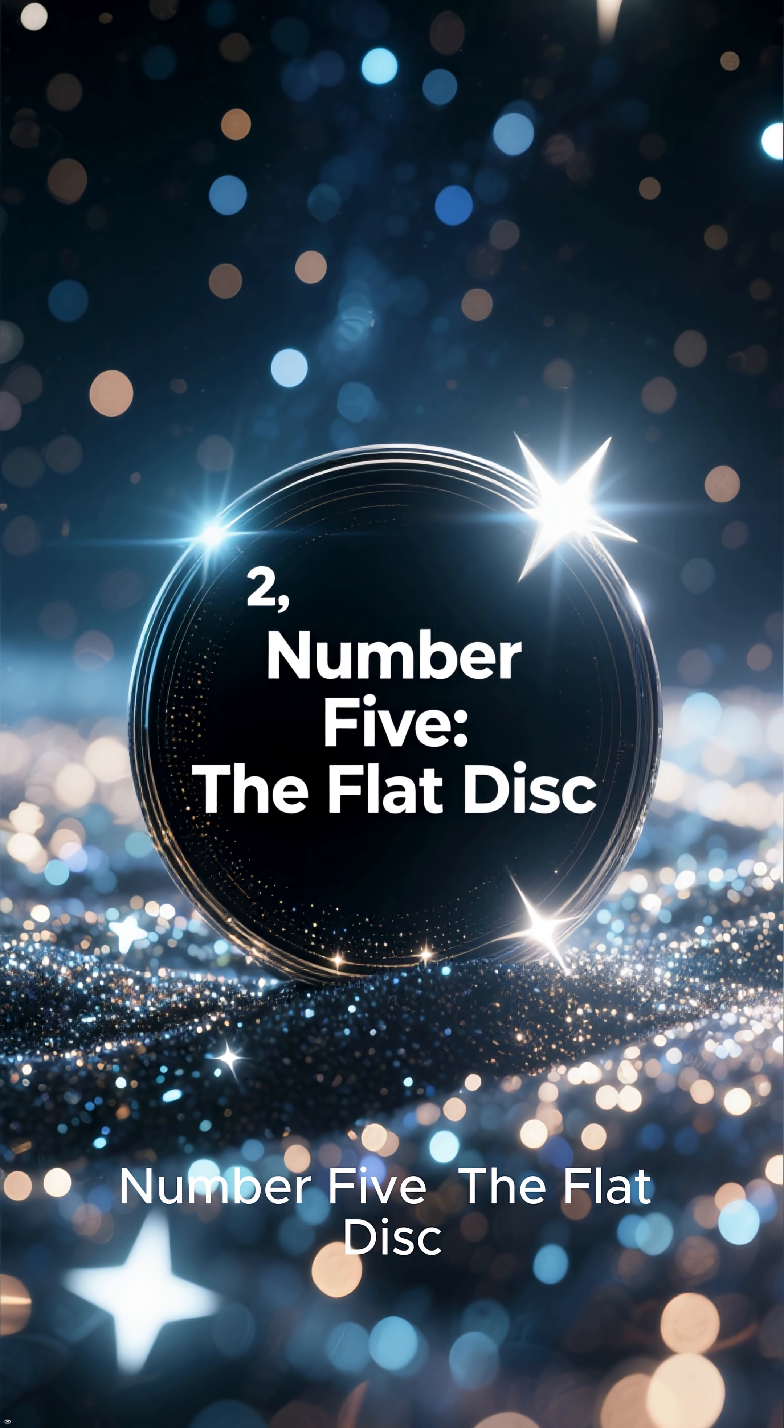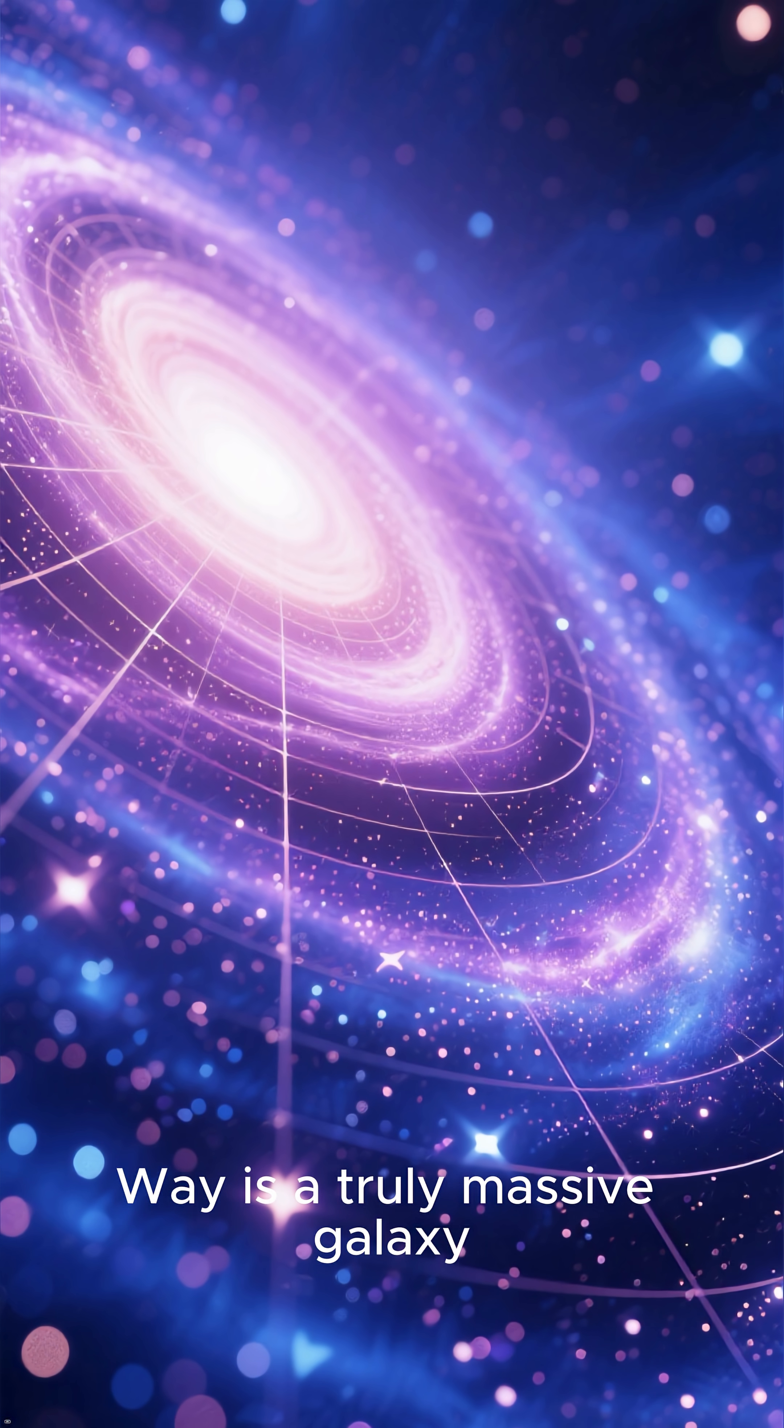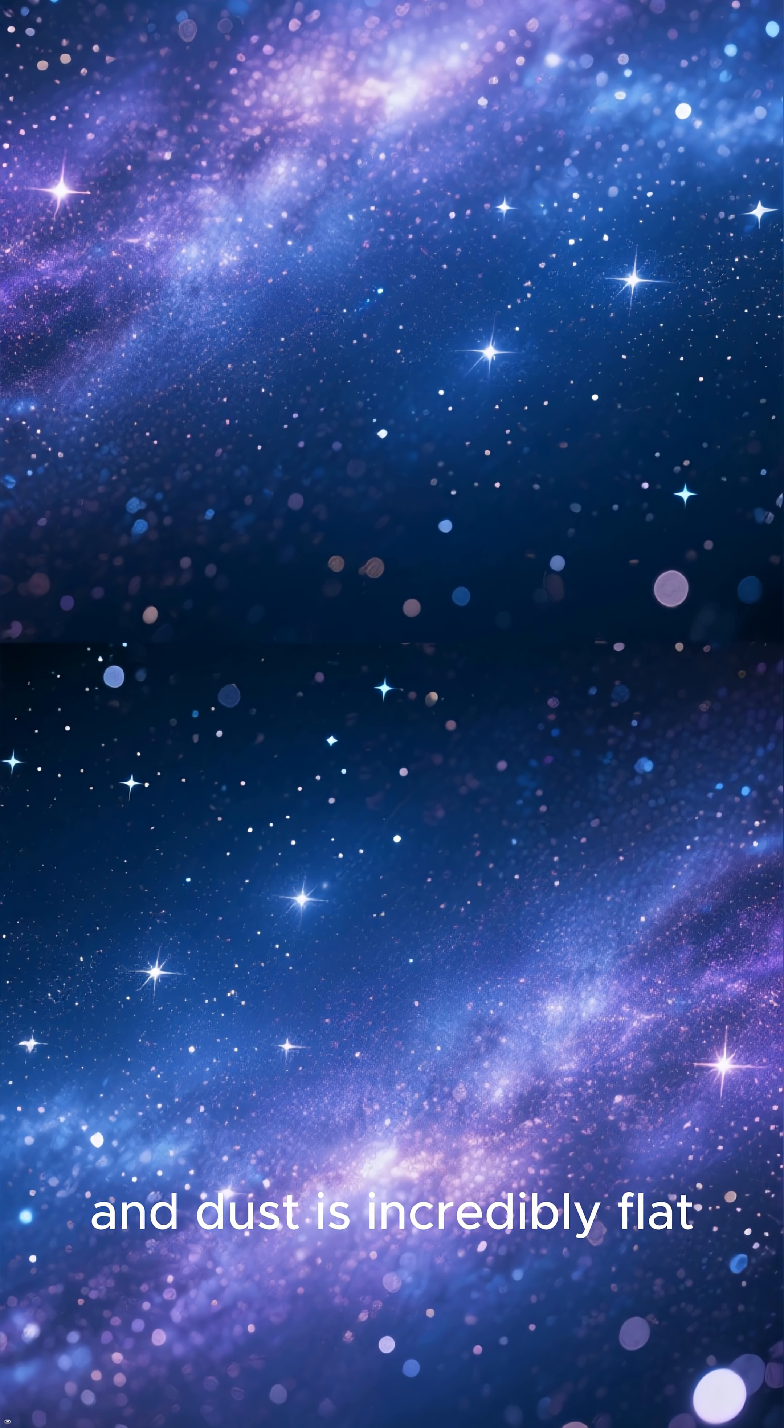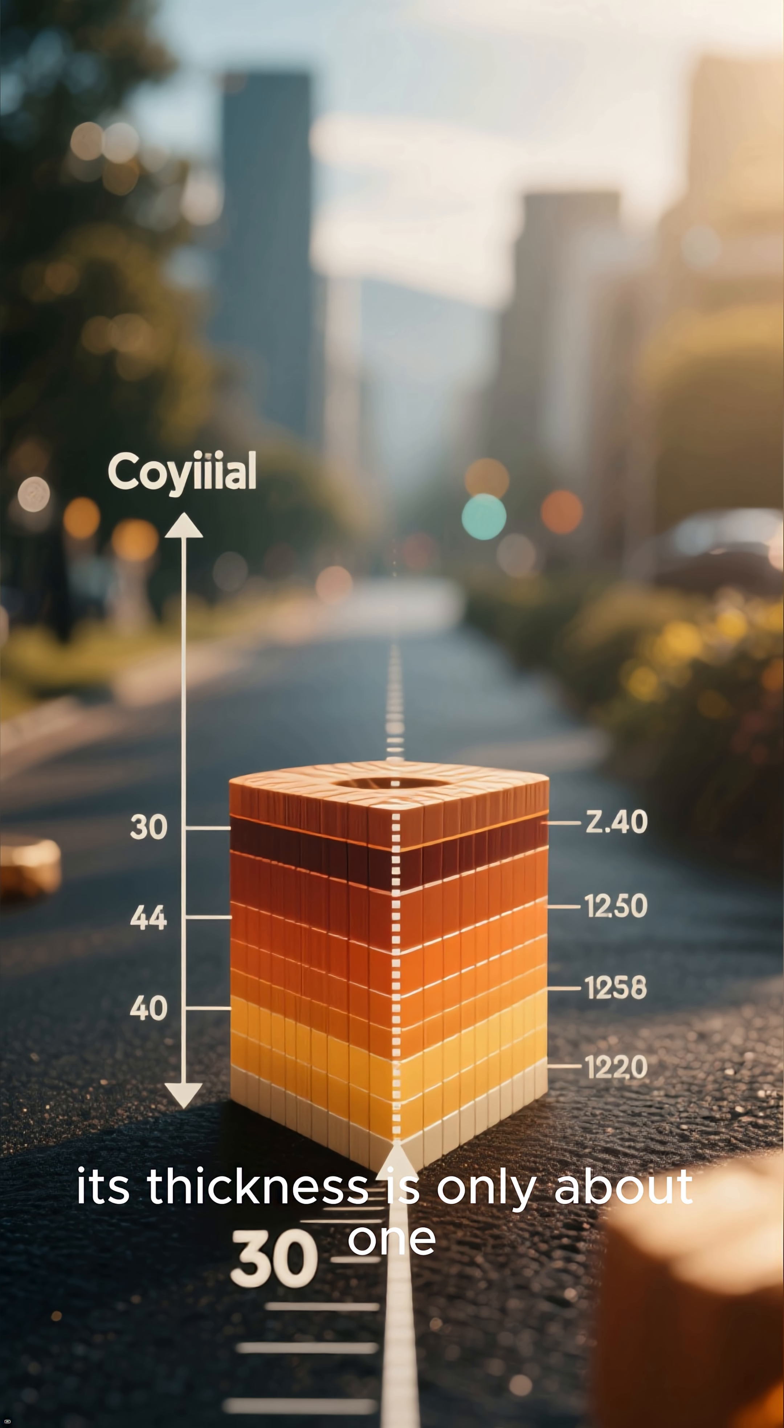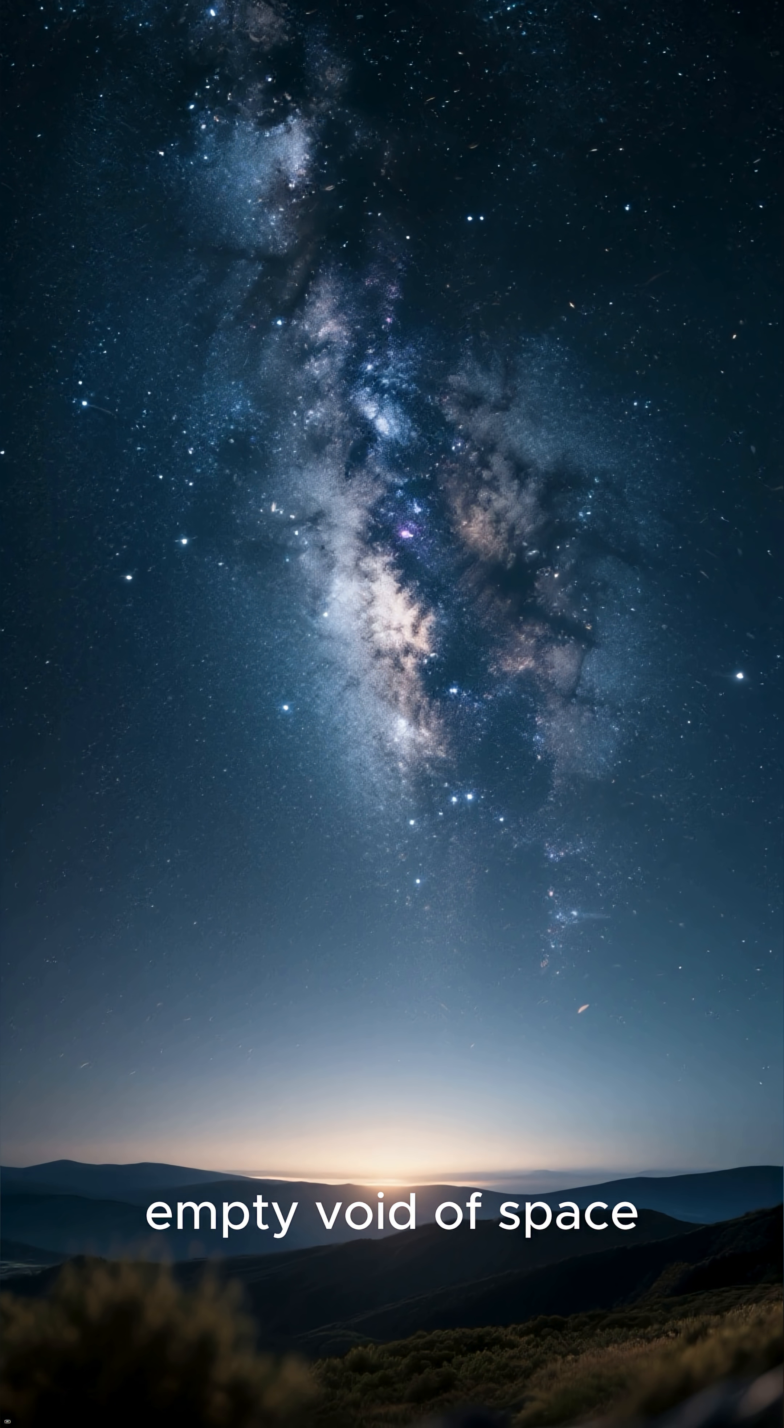Number 5. The Flat Disc. Our journey into terror begins with a truth so immense it is difficult to grasp. While the Milky Way is a truly massive galaxy, its shape is a shocking reality. The disk of stars, gas, and dust is incredibly flat. While it is 100,000 light-years across, its thickness is only about 1,000 light-years. It is a terrifyingly thin structure, a cosmic pancake in the vast, empty void of space.